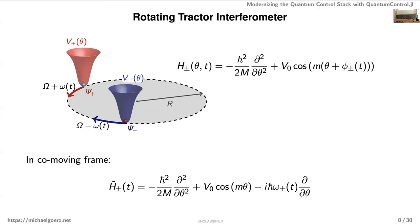The Hamiltonian is slightly unusual from a control perspective. In the lab frame, the control is the rotational offset φ, which appears as a shift of the potential rather than as a prefactor in front of it. In the co-moving frame, the control becomes ω (the time derivative of φ), and it appears in momentum space. This is the kind of unusual structure that prior code would not have handled out of the box.